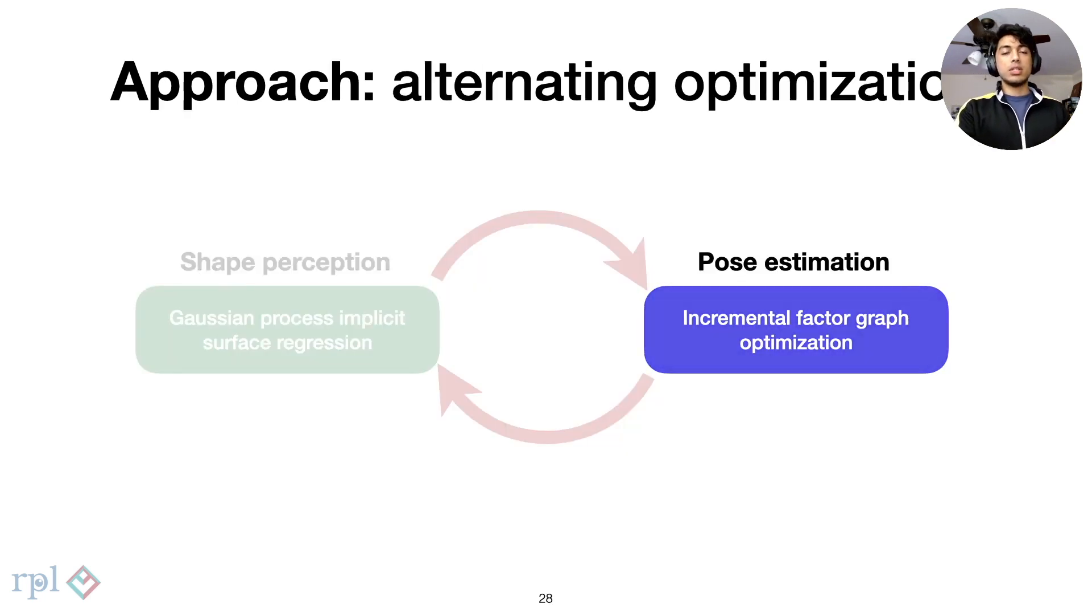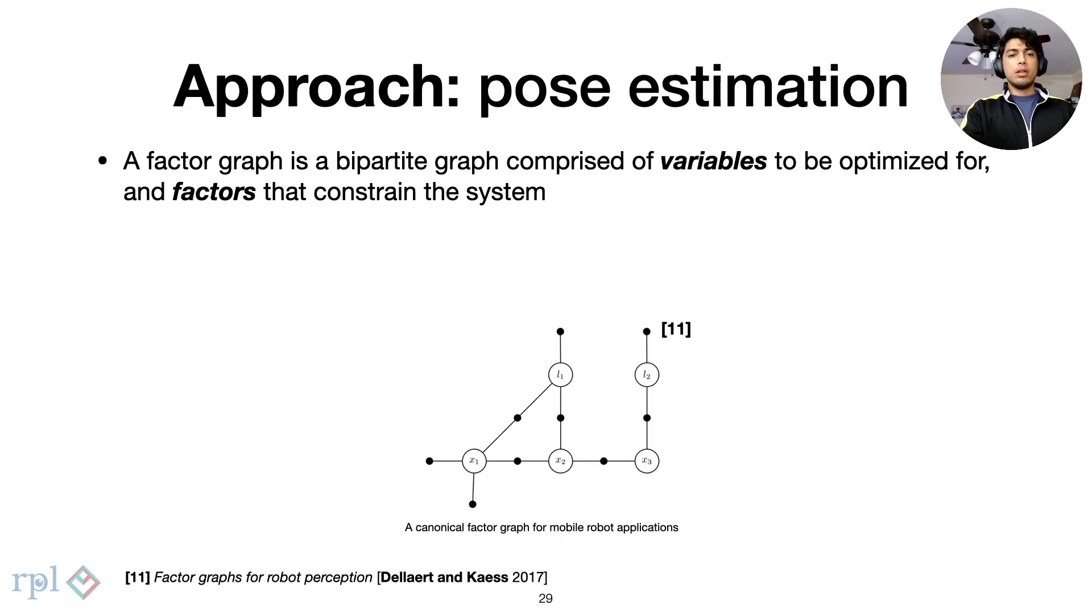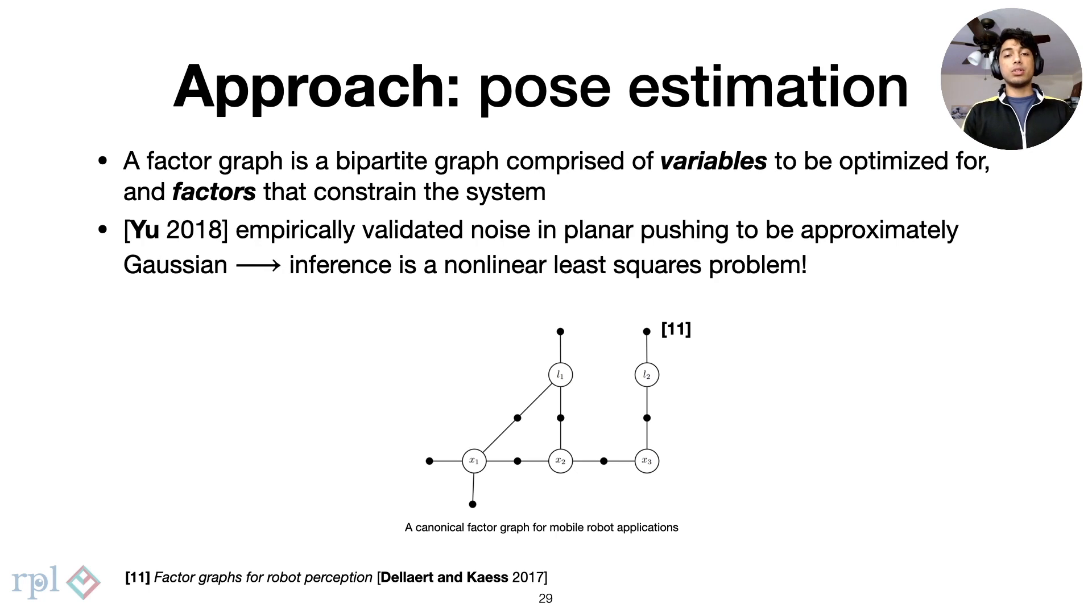Next, we look at the localization module. A factor graph comprises of the variables we wish to optimize for and the factors that constrain them. In prior work, Yu and others conclude that Gaussian noise is a reasonable assumption for contact interactions. Given that assumption, our inference reduces to a nonlinear least squares problem. Given below is a canonical factor graph for a landmark SLAM problem in mobile robotics.